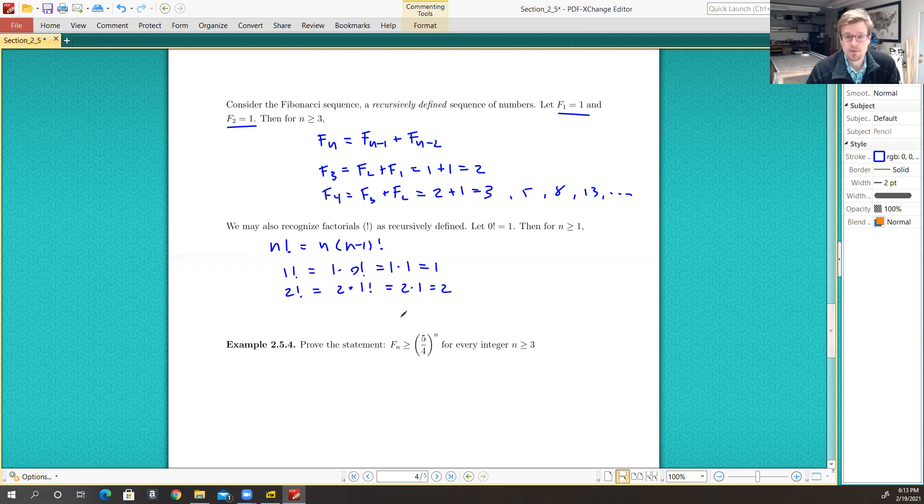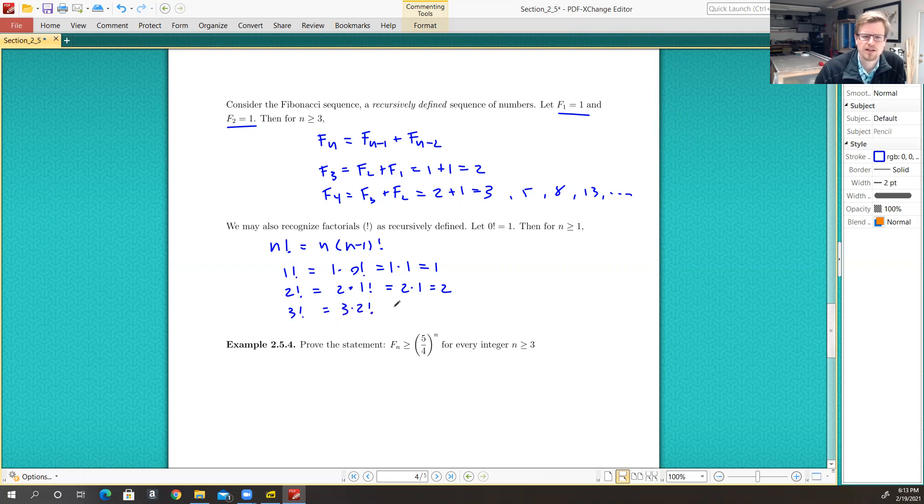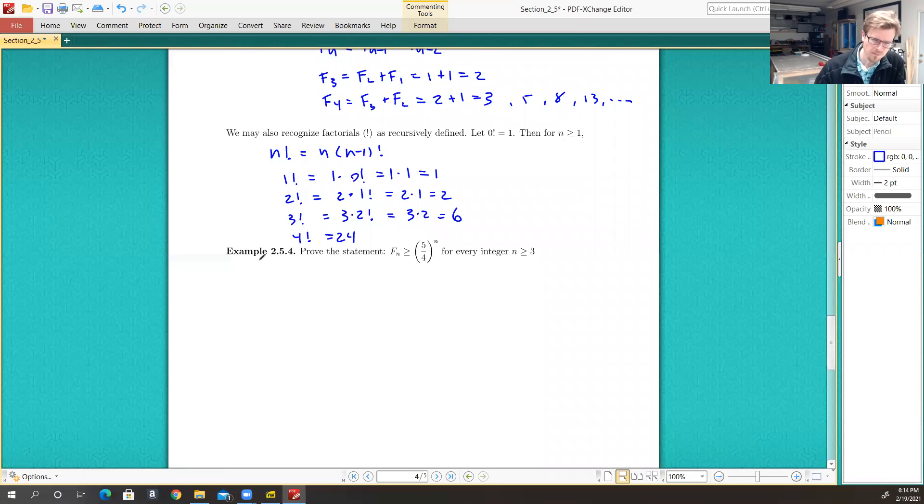Looks a lot like the Fibonacci sequence so far, but it doesn't stay that way. 3 factorial is 3 times 2 factorial, which is 3 times 2, which is 6. 4 factorial would be 4 times 6, which is 24. 5 factorial would be 5 times 4 factorial, which would be 120. We've seen a little bit of this already, but the point is that we can recognize factorials as having a recursive definition.